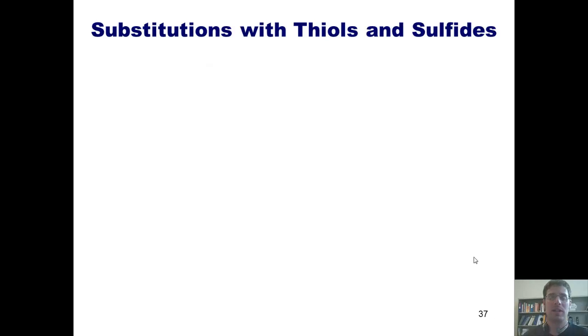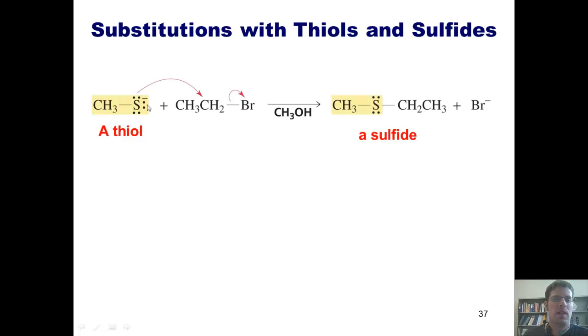We now move on to an additional subject, substitutions with thiols and sulfides. This molecule right here, that is, if this sulfur was attached to a hydrogen instead of having a negative charge, would be called a thiol. When I remove that hydrogen with a base and replace it with a negative charge, this charged sulfur compound called a thiolate can act as a nucleophile to attack a carbon on an alkyl halide and kick off the halogen itself. That forms this type of molecule in which the sulfur is bonded to two alkyl groups, which is called a sulfide.